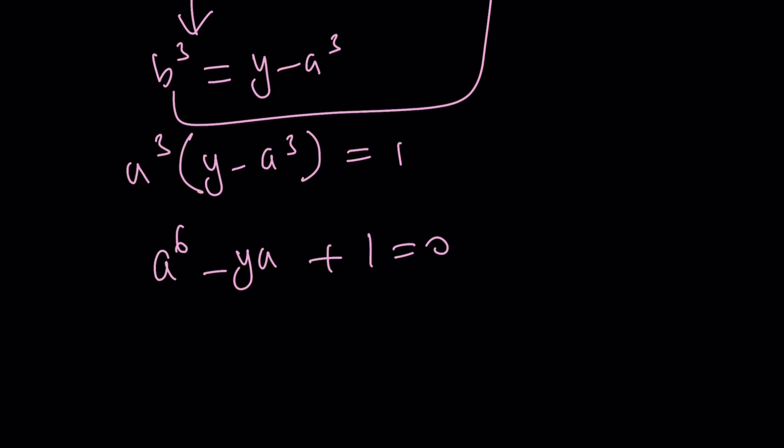Distribute and put everything on the same side. a to the 6 minus y a cubed plus 1 equals 0. And now, you get a quadratic. It's not hexic because it's biquadratic. Is it tricubic? Anyway, something like that. You get the idea. Hopefully, let's go ahead and call this something. How about c?